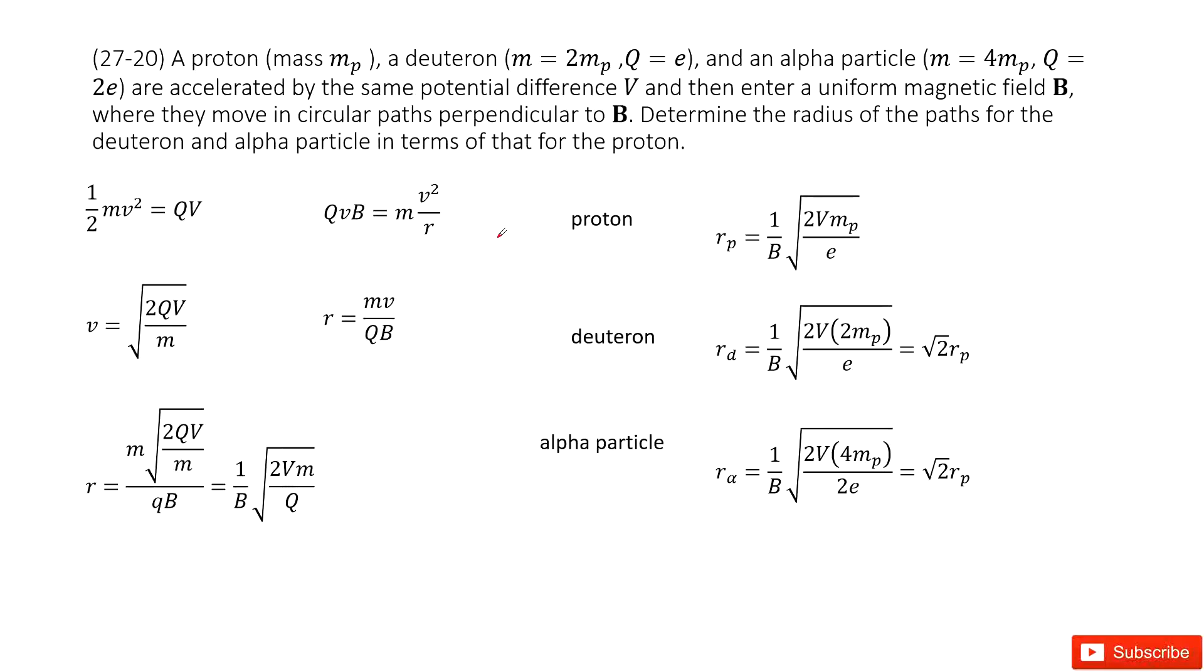They are accelerated by the same potential difference V and then enter a uniform magnetic field B. They do circular motion. We need to find the radius for the circular motion.